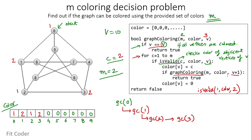We call graph coloring for vertex 4. With C=1, adjacent vertex 0 has color 1, so isValid returns false. We increment C to 2, but adjacent vertex 3 is colored 2, so isValid is false for that too. The for loop terminates and we return false.